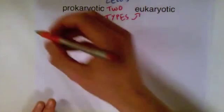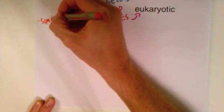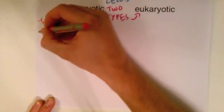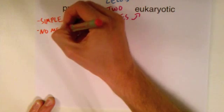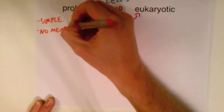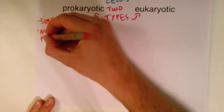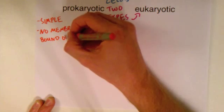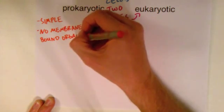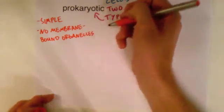Alright, so prokaryotic cells are very simple, not a lot going on, and they also have no membrane-bound organelles. Organelles are parts of the cell that serve specific functions for that cell, and prokaryotic cells have no membrane-bound organelles, so organelles are not covered by a membrane.